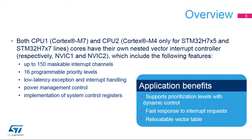These controllers include the following features: up to 150 maskable interrupt channels, not including the 16 interrupt lines of Cortex-M7 with FPU; 16 programmable priority levels with 4 bits of interrupt priority used; low latency exception and interrupt handling; power management control; and implementation of system control registers.